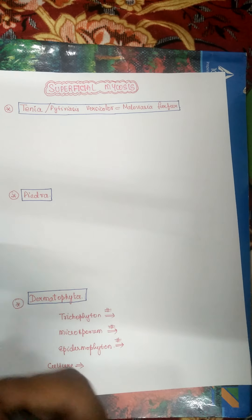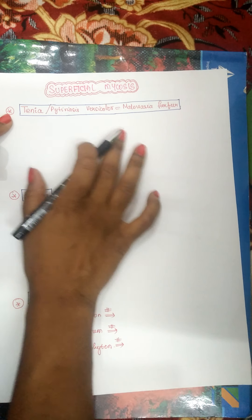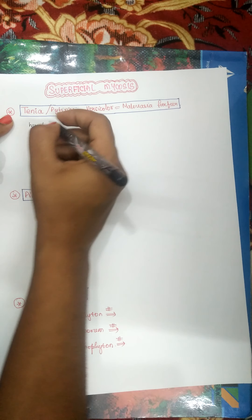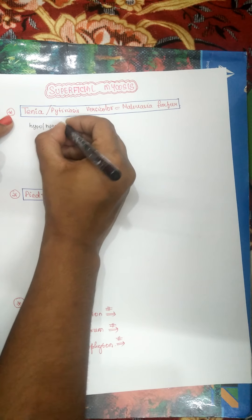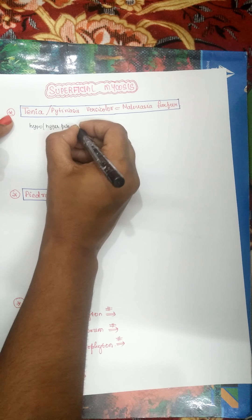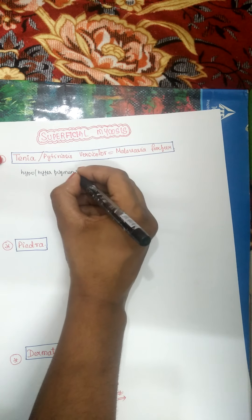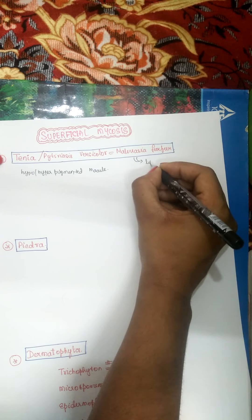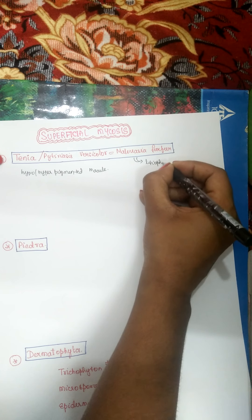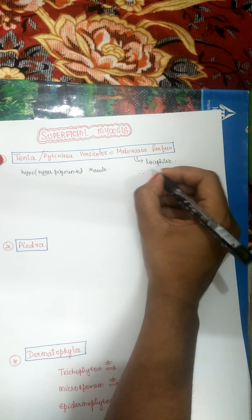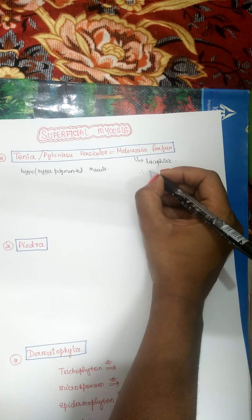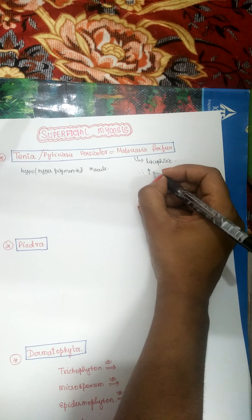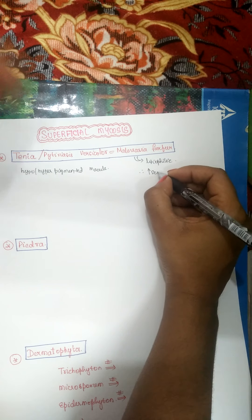Coming to tinea or pityriasis versicolor — it causes hypo or hyper-pigmented macules. It is lipophilic, meaning it thrives in a media where there is more lipid content.